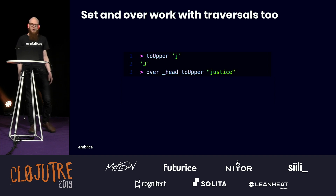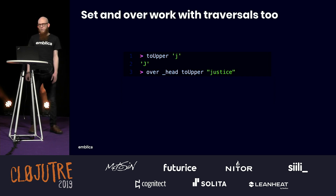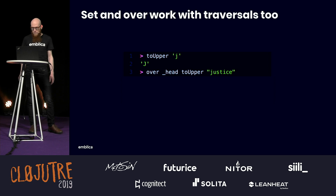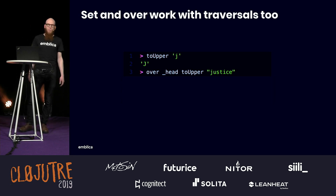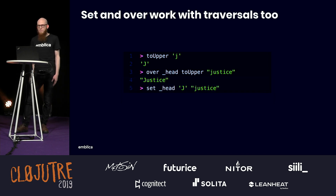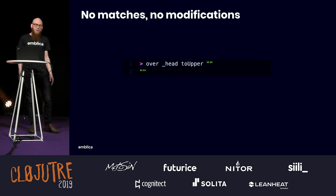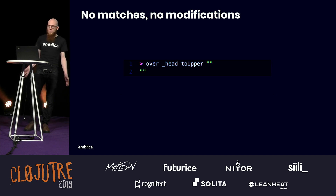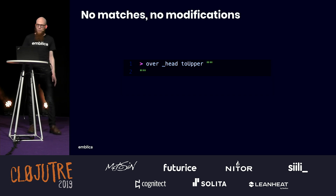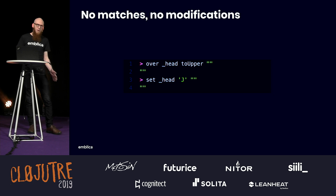But, like previously, we had these functions set and over and we can still use them. We have this function toUpper that converts letters to uppercase on single characters. We can now use over — that's like updateIn — focus on the first letter of a string, call toUpper on it, and wrap the result back in a string. So we capitalize the string. We can also replace the match with just a single value. If you didn't match on anything — say we have the empty string and we try to convert the first letter to uppercase — we just don't do anything and return the string as is. Similarly, if you try to set the matching first element when there were none, you replace nothing.